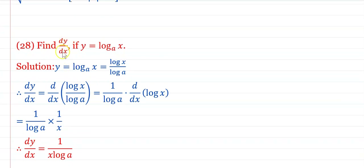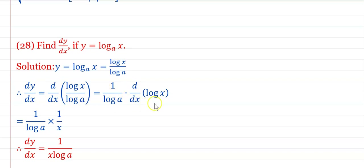Find dy/dx if y = logₐ(x). Here y = log x / log a. Differentiating, dy/dx = (1/log a) × d/dx(log x) = (1/log a) × (1/x). Therefore dy/dx = 1/(x·log a).